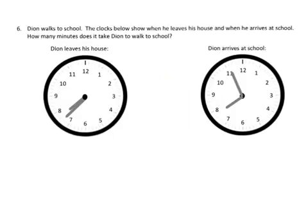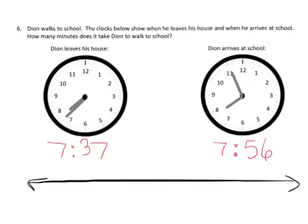And our last problem for this video, Dion walks to school. The clocks show when he leaves and when he arrives. How many minutes did it take Dion to walk to school? So the first thing we have to do is identify that this clock says that he started his walking. So he left his house at 7 hours and 37 minutes. So 7:37. You might want to pause the video and verify that you understand how we got 7:37. And when did Dion arrive at school? Well, he still arrived within that 7 o'clock hour, because we haven't quite reached the 8 o'clock hour, and it looks like it's 7:56.